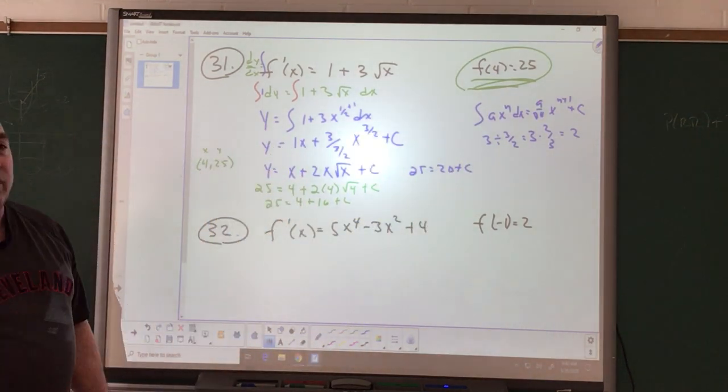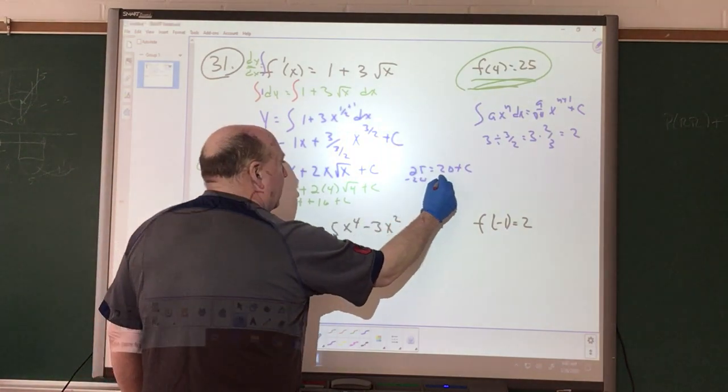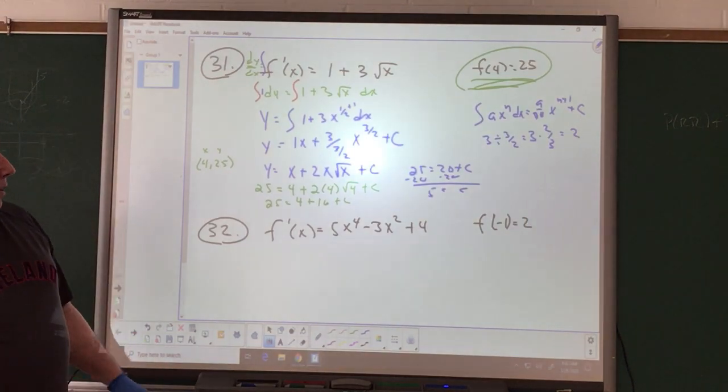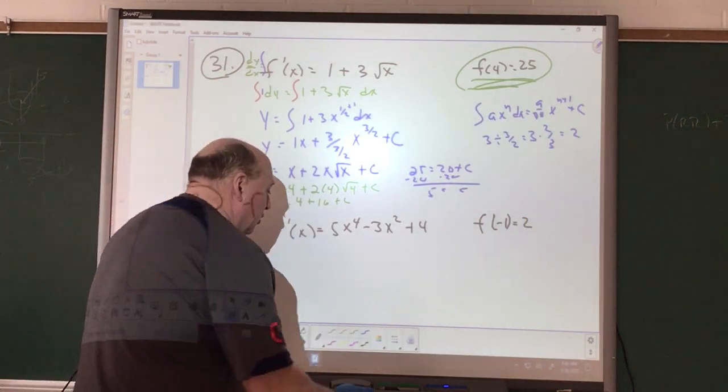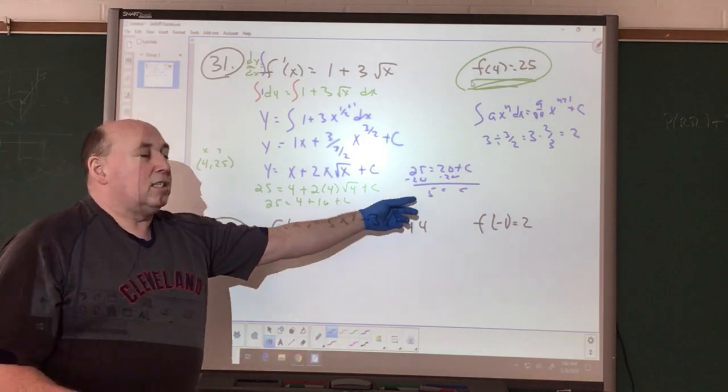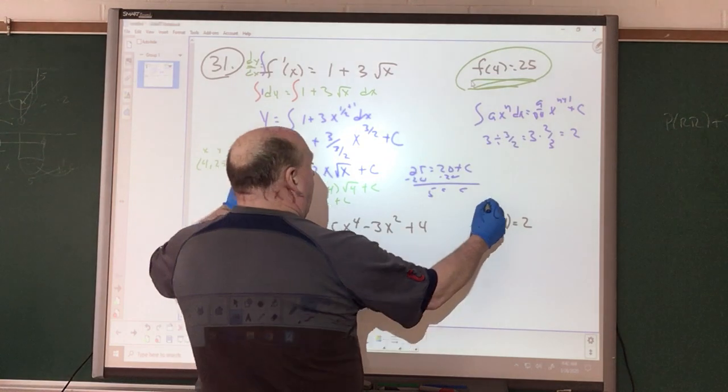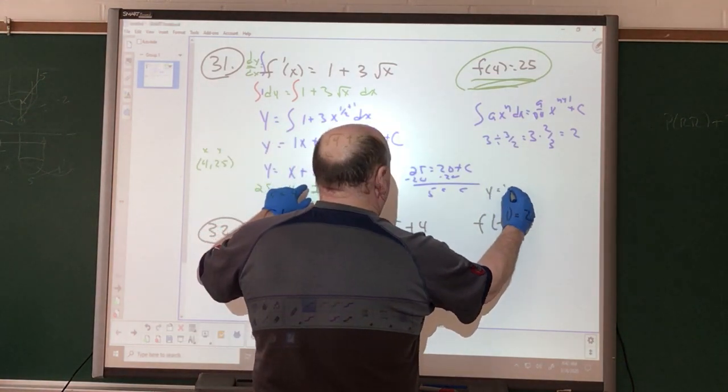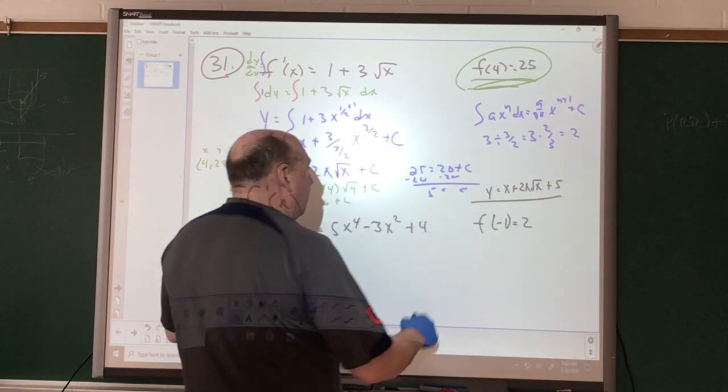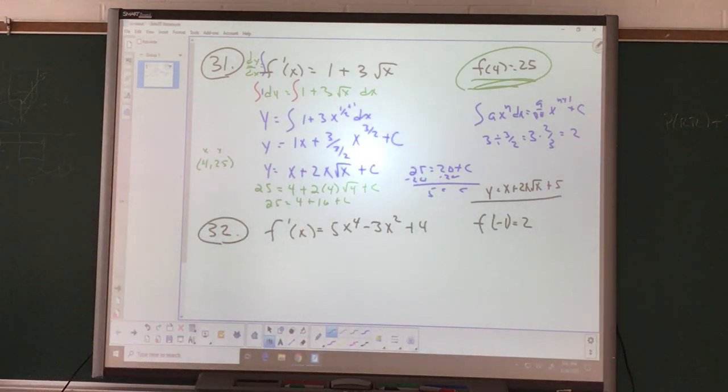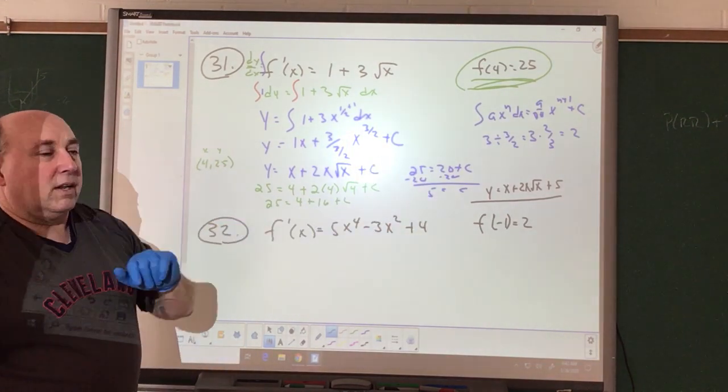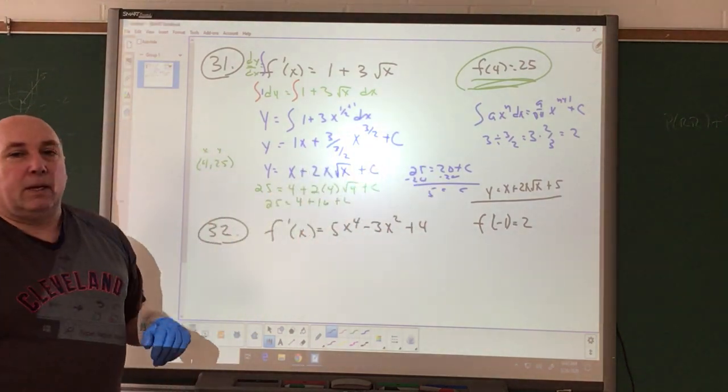Adding the 4 and 16 together, I get 20. So we have 25 equals 20 plus C. I can subtract my 20 over. So C equals a value of 5. When you're done with this, you want to rewrite what your equation is. My solution is Y equals X plus 2X square root of X plus the value of 5. Don't just say C equals 5 and leave it. Solve for C and then sub it in.